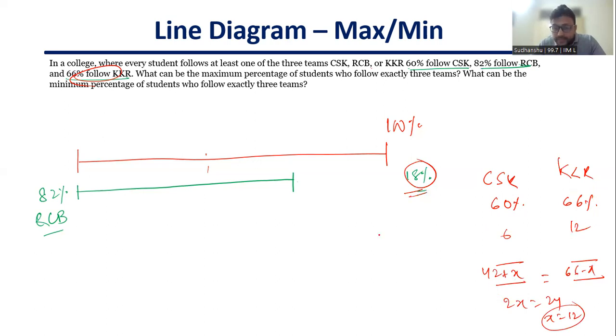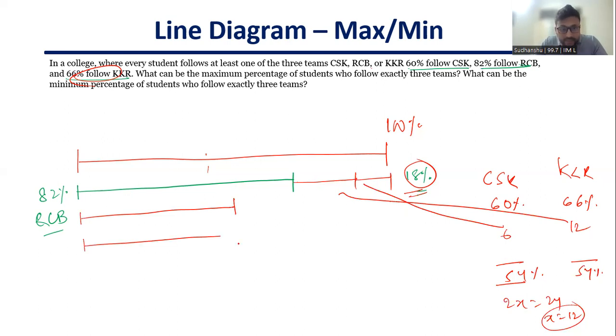So I'll take 12 from here and I'll take 6 from here. That will give me 18. So let's say I put, I take this 12, I put it here. I take this 6, I put it here. So this has been taken care of and this becomes my 54% and 54%. So 54% CSK, I put it like this and 54% KKR, I put it like this. So the maximum alignment that I get here is 54%. I'm hoping that this is clear to you. So that gives you the maximum in this kind of a problem.